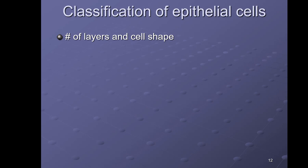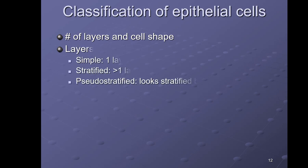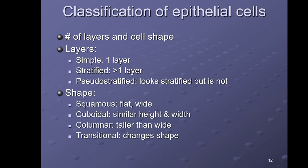Epithelial tissues are classified by the number of layers of cells present and also by shape. As far as the number of layers: if there is only one layer of cells it is classified as simple; if there is more than one layer it is called stratified; and if it looks stratified but isn't, it is called pseudostratified. The shape refers only to the outer layer — if there are multiple layers, naming is based on the outermost or most superficial layer.